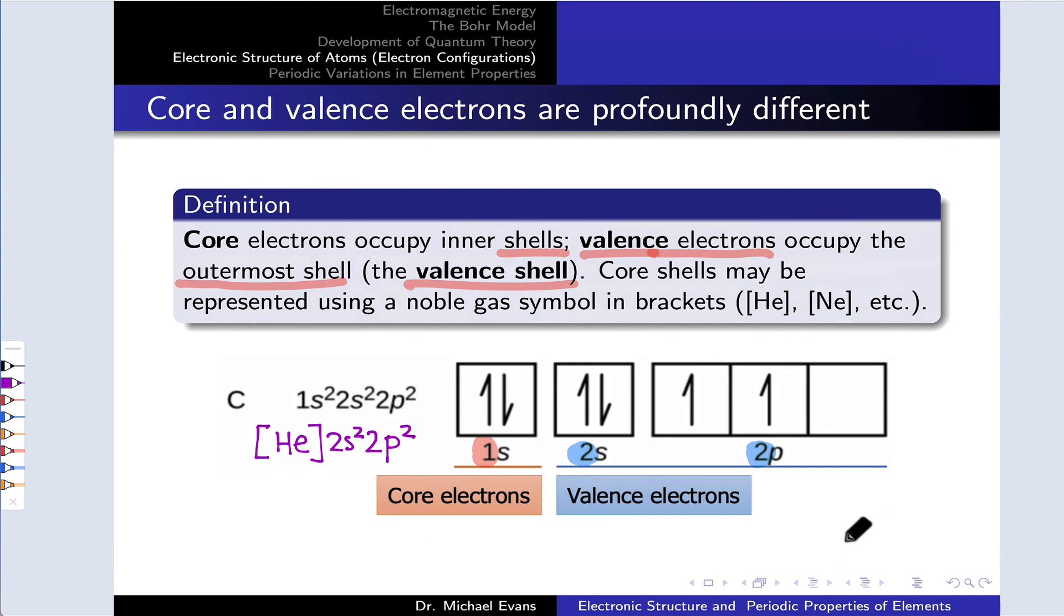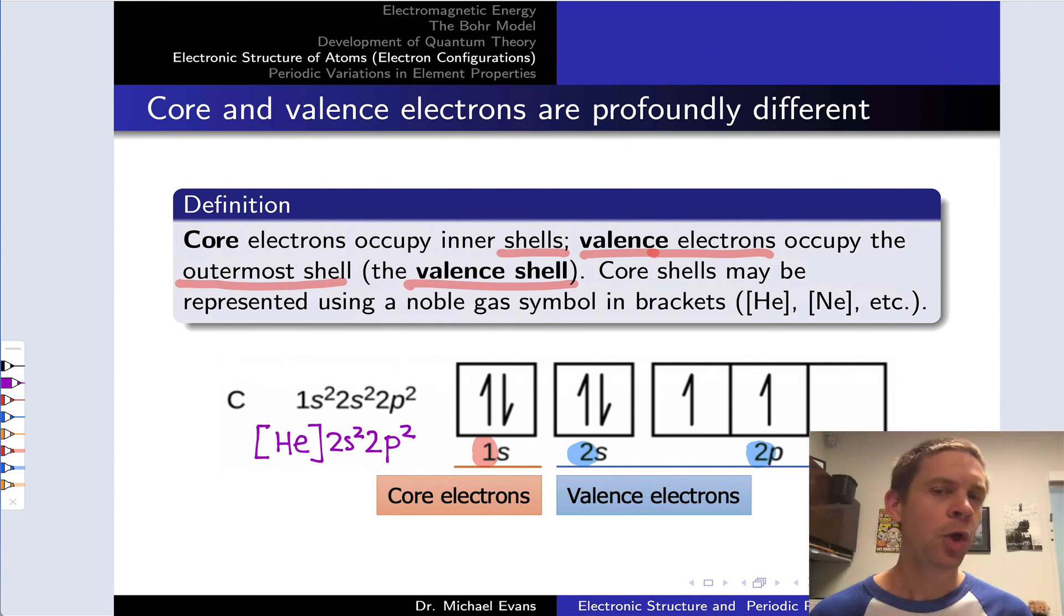At this point, we have all the analytical tools we need to write electron configurations out to calcium. When we get to the transition metals, things get a little complicated. And the next video is going to kind of complicate this picture for the transition metals. If you're only asked to write electron configurations through calcium or for the main group elements, you can skip the next video.